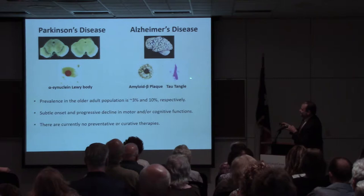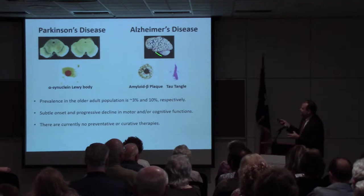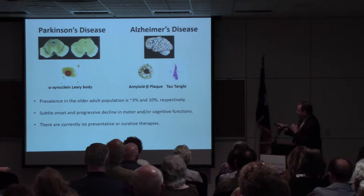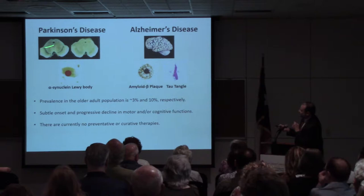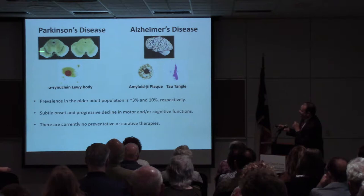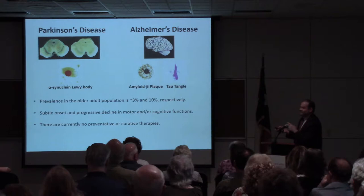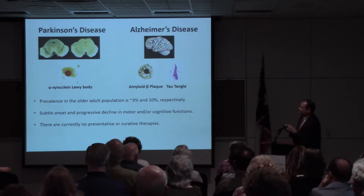These protein aggregates form in brain regions that subsequently show significant atrophy. This brain from someone who died with Alzheimer's disease shows regions that are shrinking due to neurodegeneration — you're not supposed to see all that empty space. In Parkinson's disease, we look at two cuts through the brain stem: the substantia nigra — that black stripe — is almost entirely gone, reflecting the exquisite loss of cells in a region essential for normal movement.